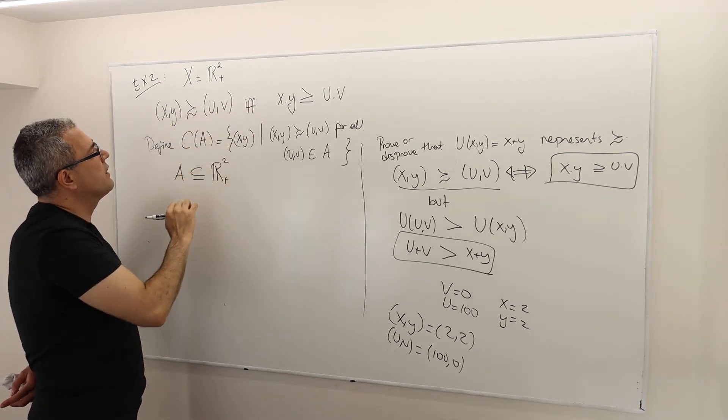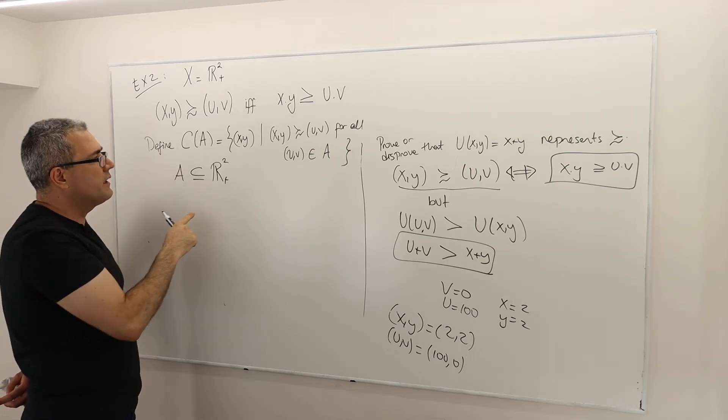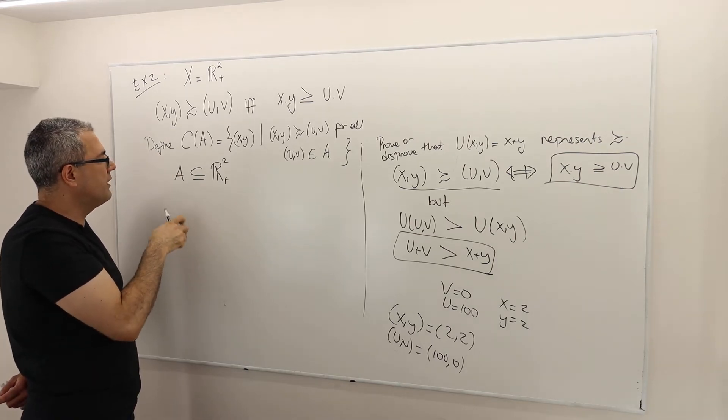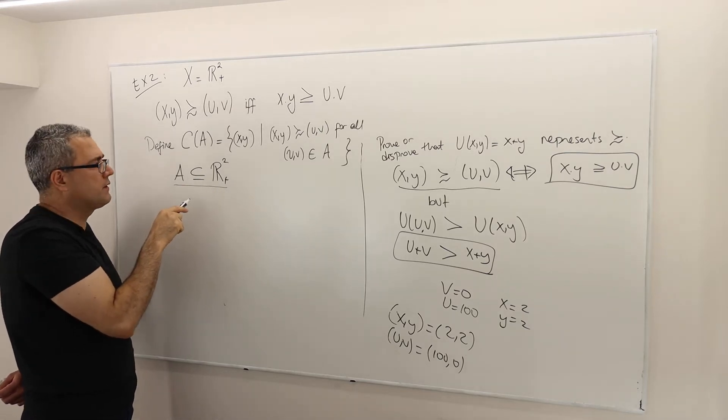So for the same preference relation, I'm defining a choice behavior. So for this choice behavior, how do I define it? I say, give me any non-empty subset of R plus square.